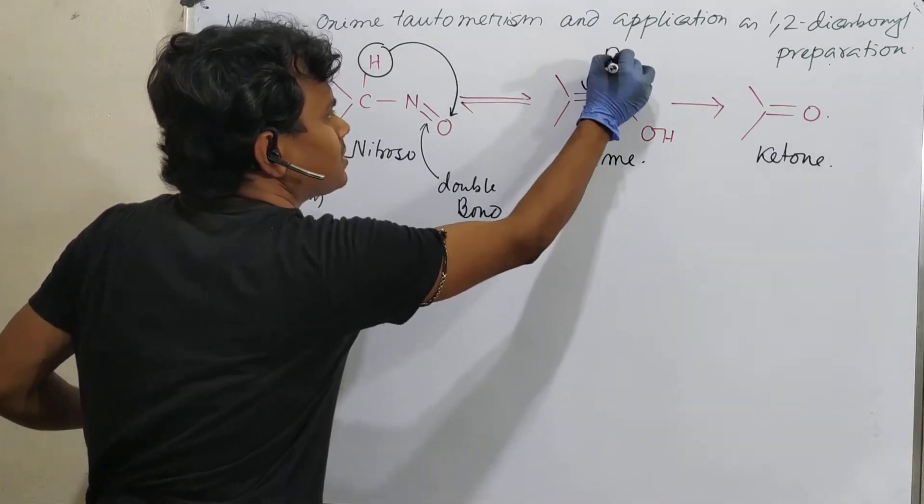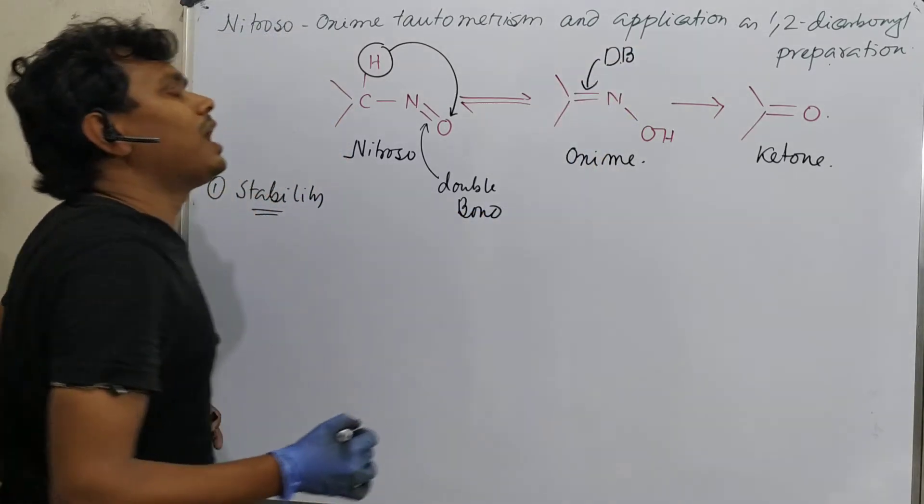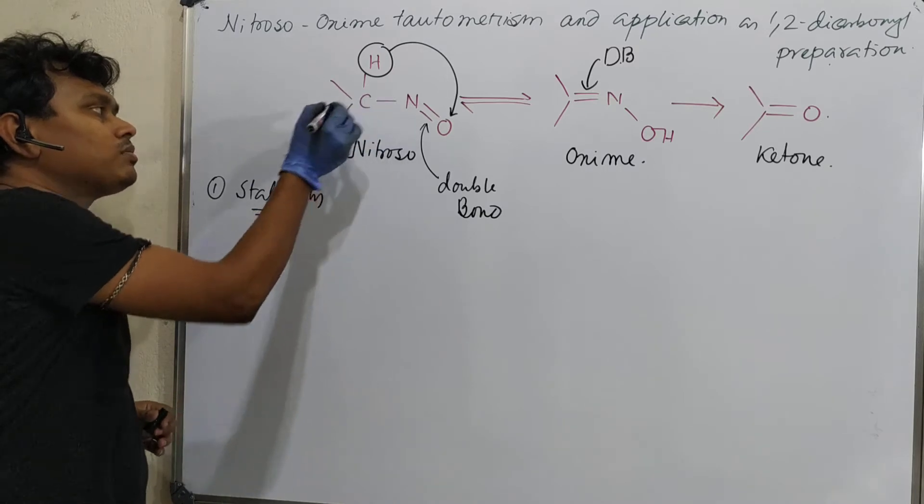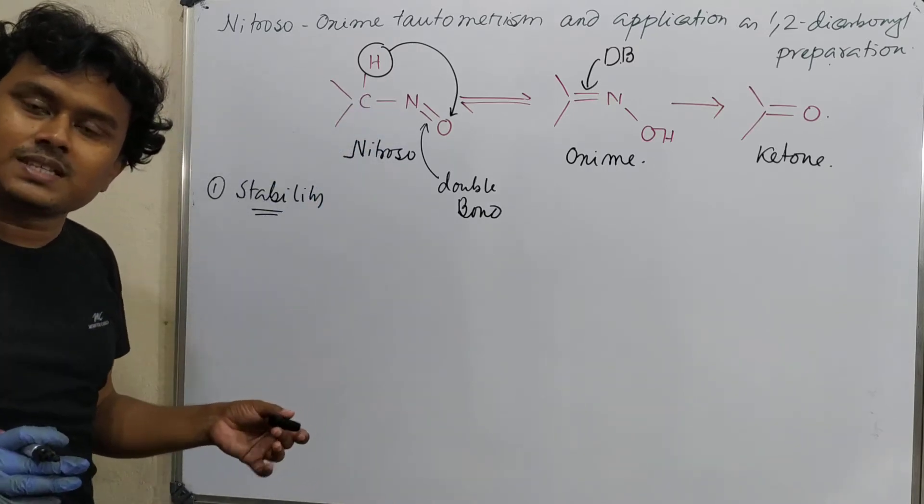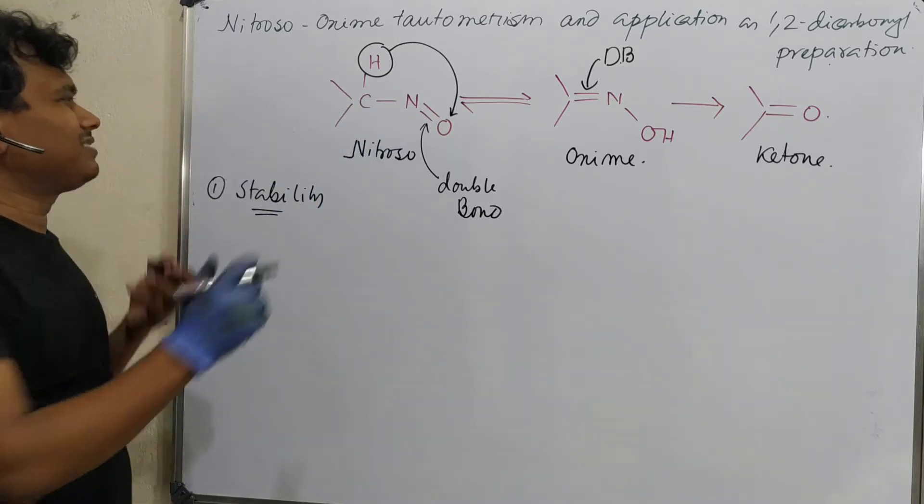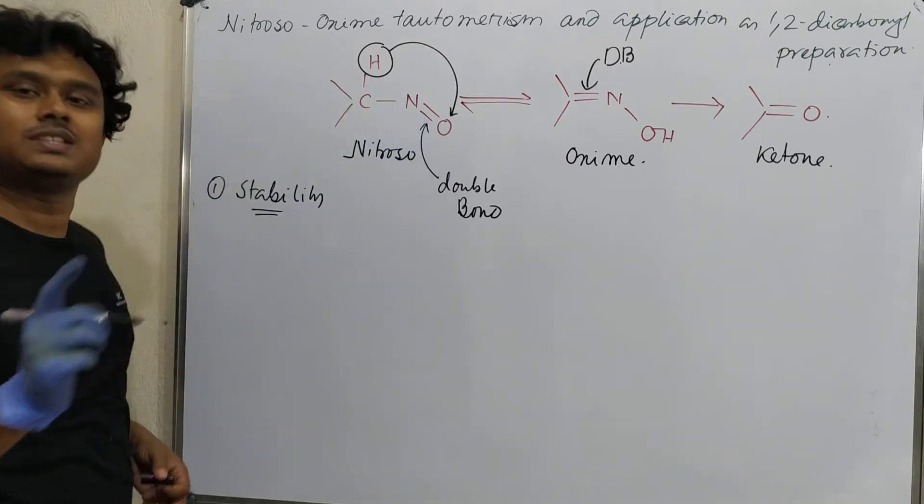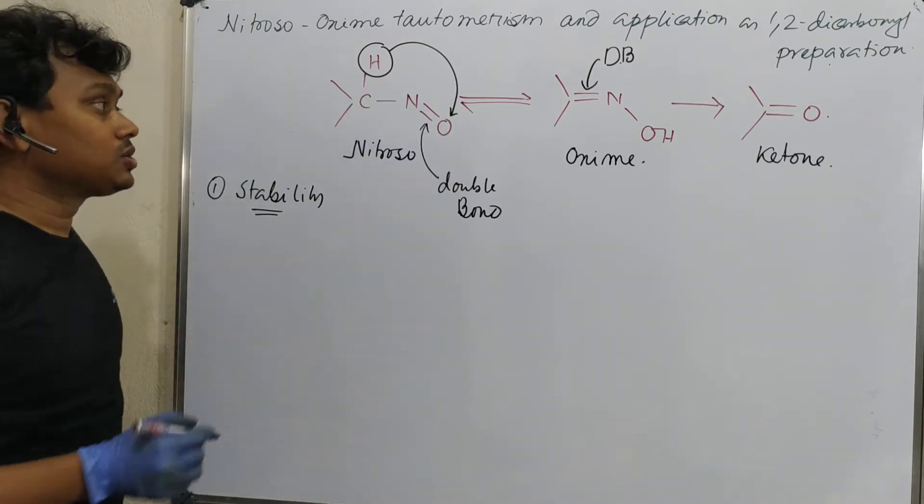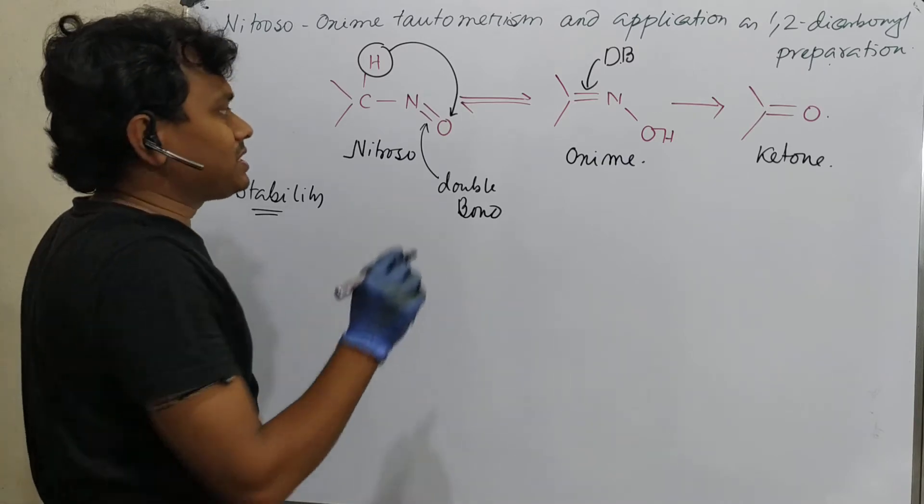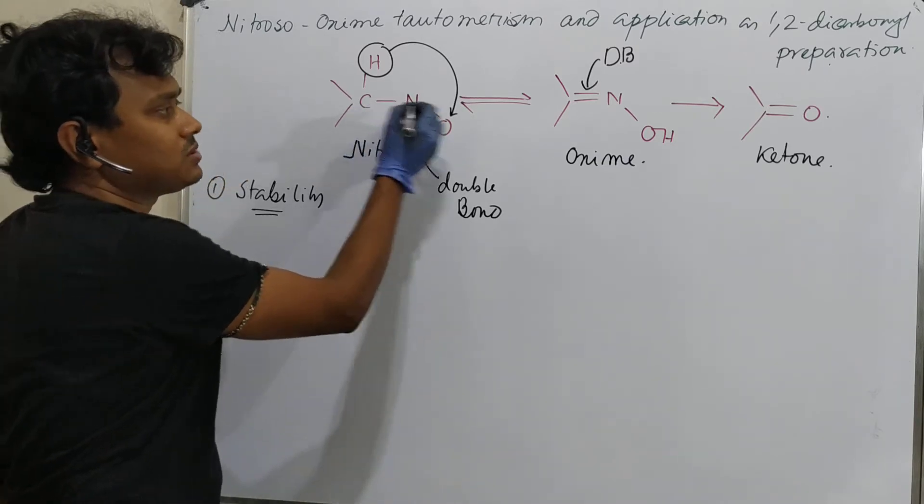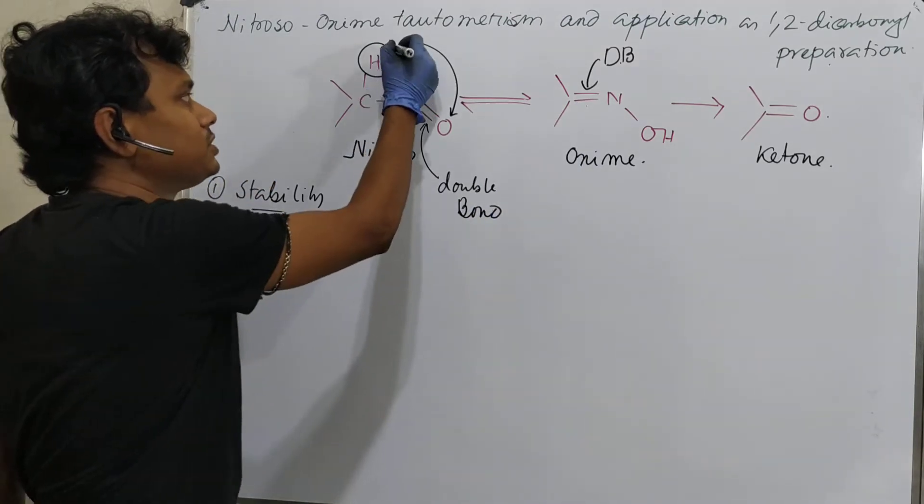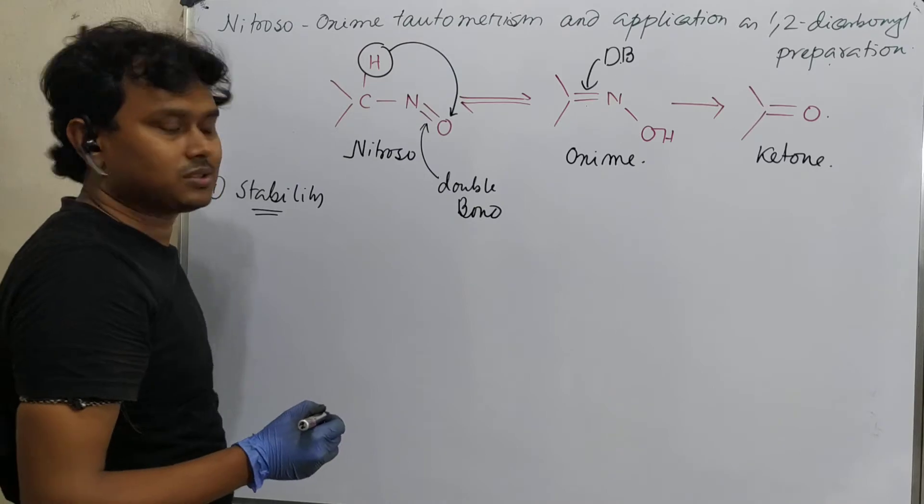Now in this case, the double bond is here. Now if the double bond is between two atoms, if the electronegativity difference is higher, the double bond between carbon and nitrogen is more stable compared to nitrogen-oxygen. So that is the main thing. In this case, this bond is more stable, this double bond. That is the main thing for this purpose to transfer this proton from here to here.